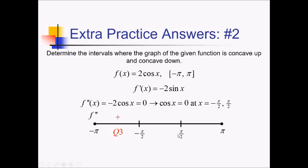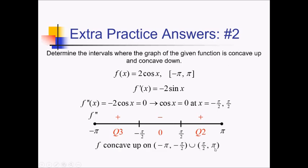Between negative and positive pi over 2, we can use 0. Cosine of 0 is 1 times negative 2 gives us a negative. And between pi over 2 and pi, that's quadrant 2. In quadrant 2, cosine is negative, but multiplying by a negative makes that positive. Since f double prime is positive in the first and third intervals, f of x is concave up from negative pi to negative pi over 2, and also from pi over 2 to pi. And since f double prime is negative in between the two critical values, f is concave down between negative pi over 2 and pi over 2.